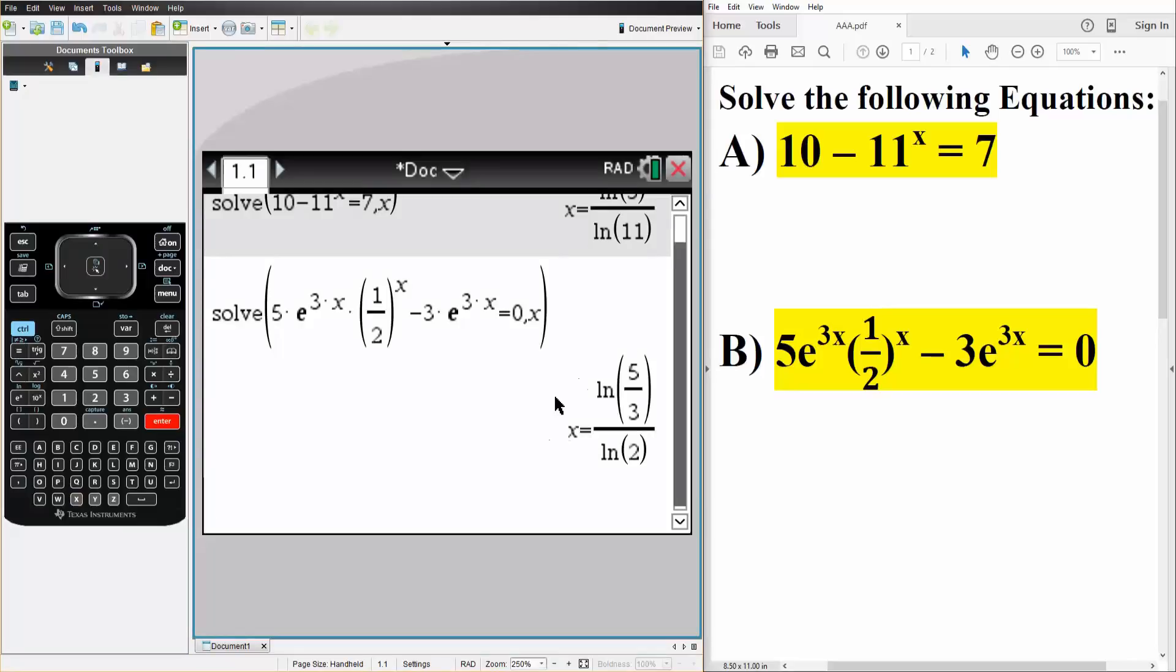simply hit enter, and this is the value of x, so the natural log of 5 thirds divided by the natural log of 2.